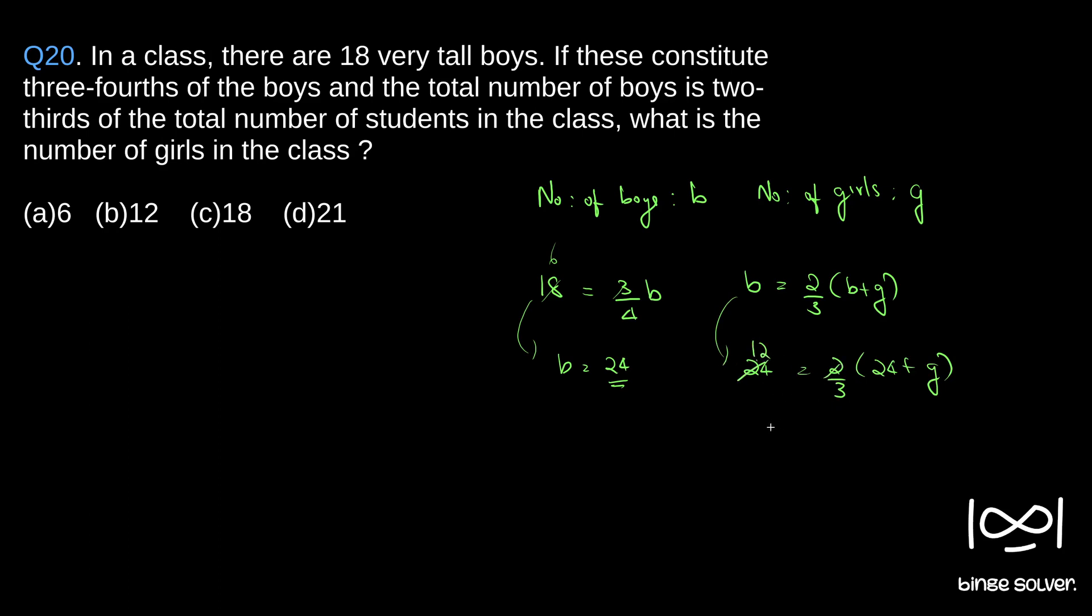12 into three is 36, is equal to 24 plus G. Or G is 36 minus 24, which is 12.